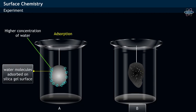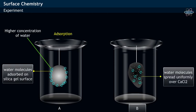While in Vessel B, it is observed that the water molecules enter inside the anhydrous calcium chloride and uniformly spread — that is, they undergo the absorption phenomenon.